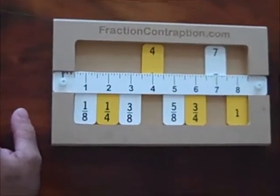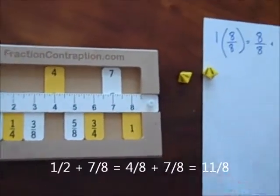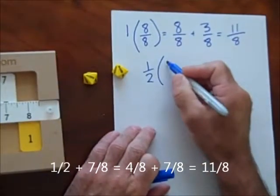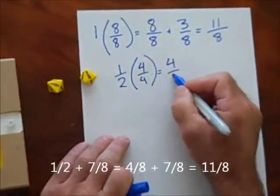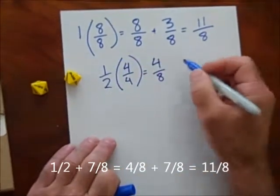Let me roll again. 1 half. So, to go from 1 half to 8, I multiply it by a factor of 1. It does not affect the value. That gives me 4 eighths plus 7 eighths.